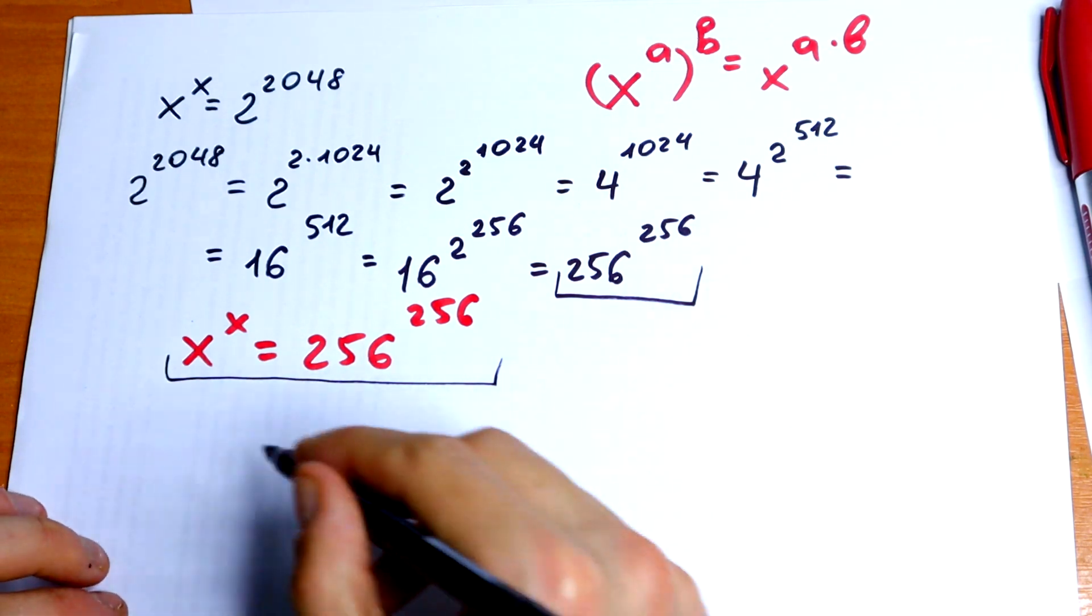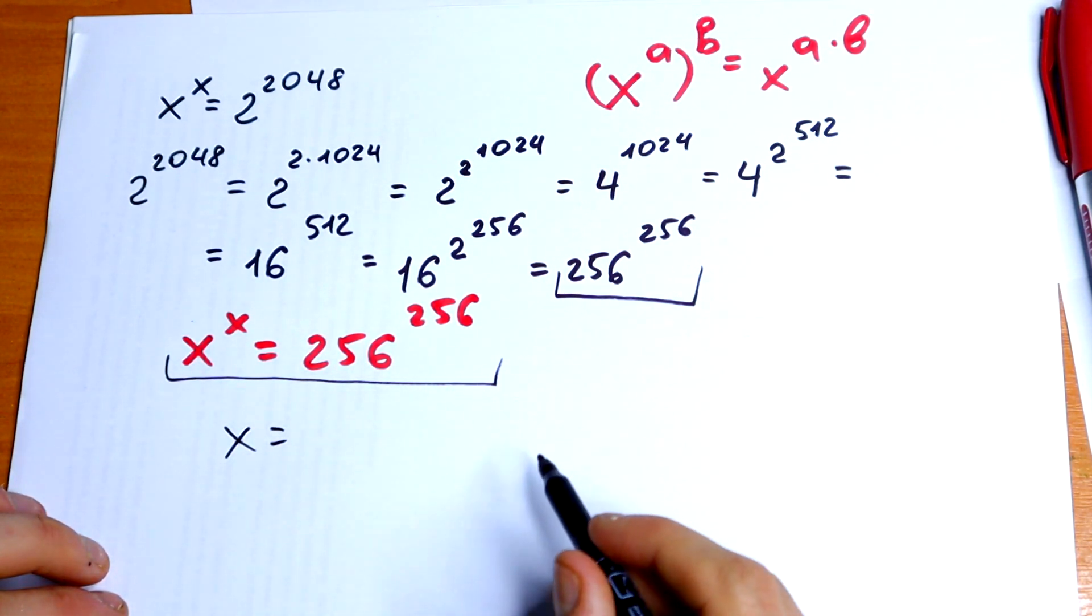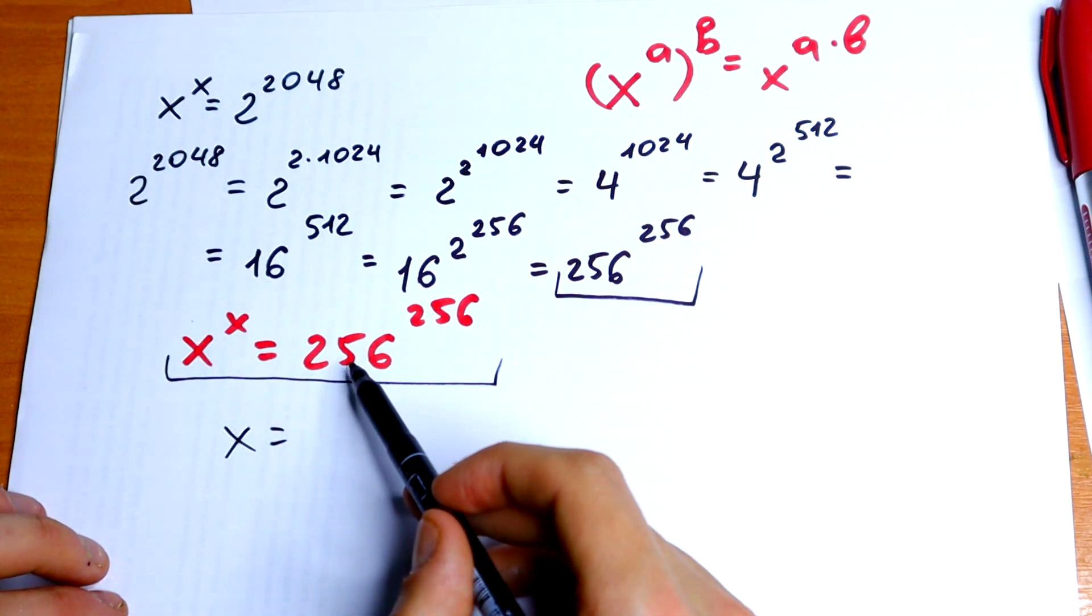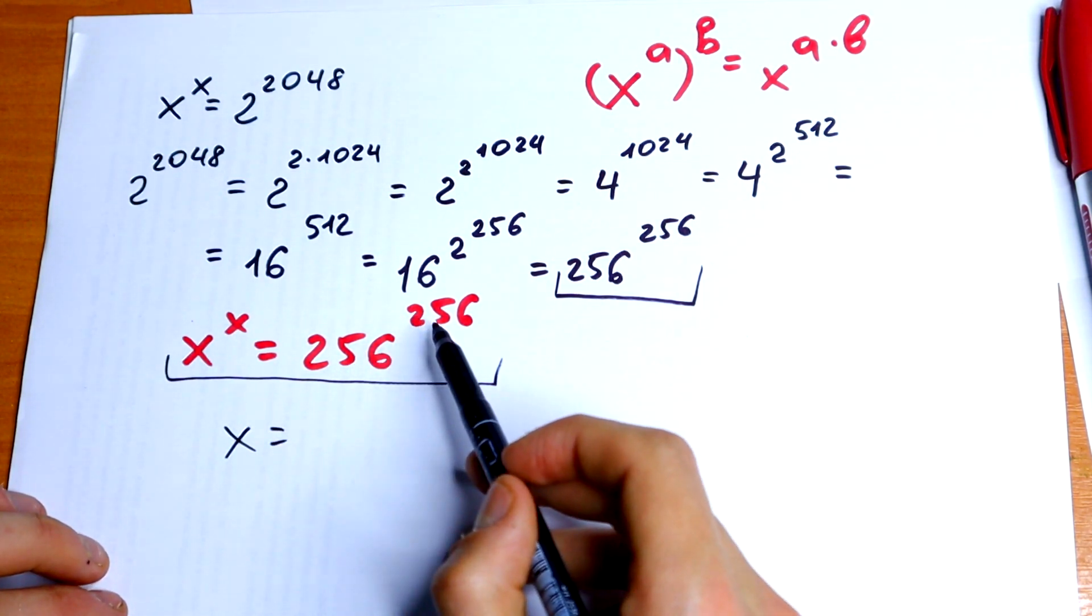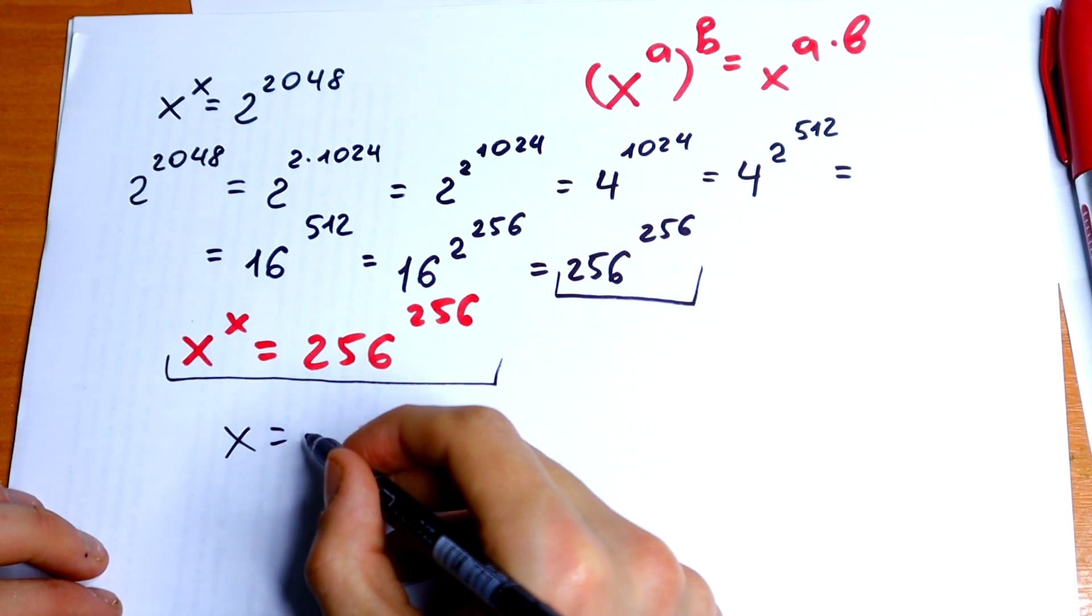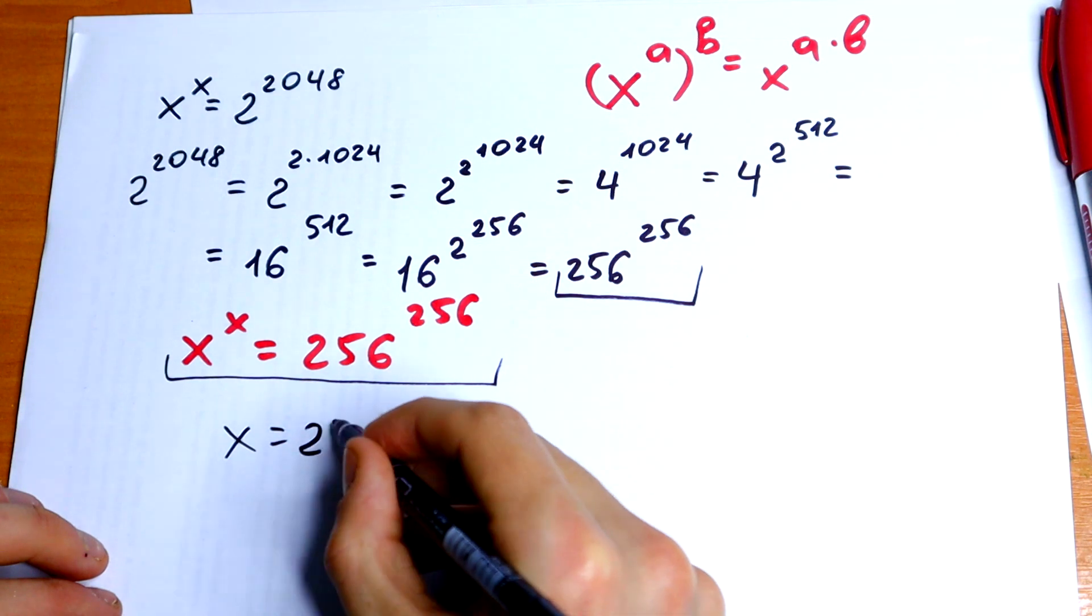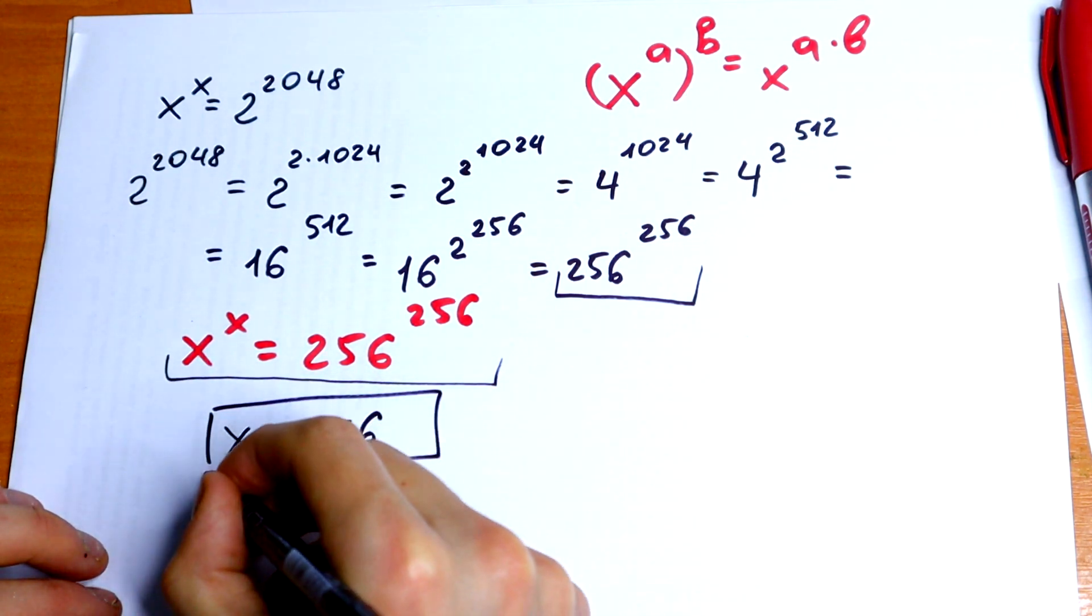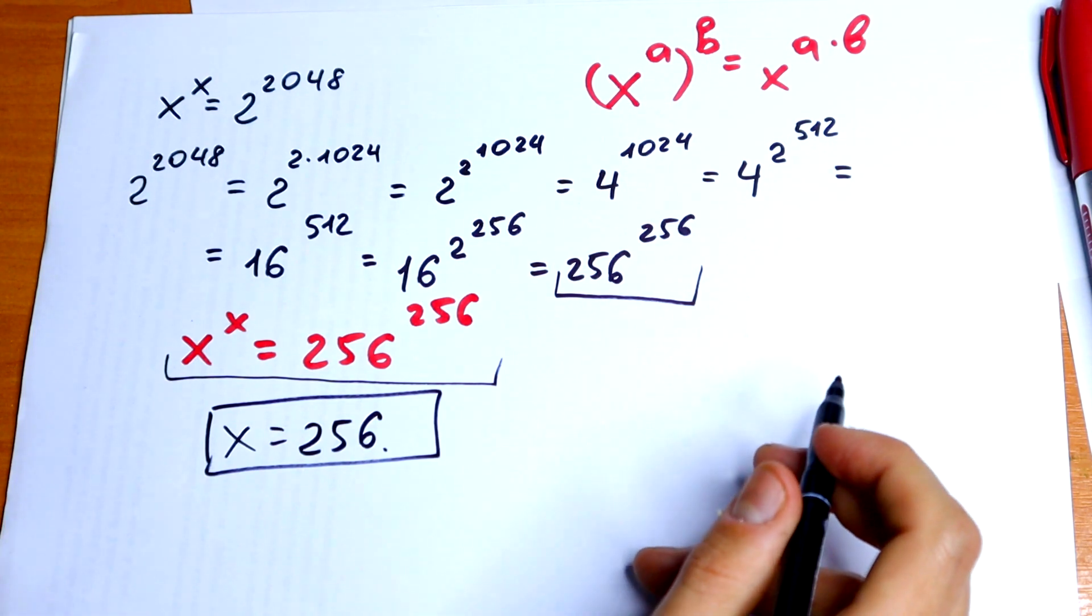So, what about x? What about resolution? For sure, we have the same base and same exponent. We have the same base and same exponent as well. So, there's no way. And x will be equal to 256. And this is our solution to this exponential equation.